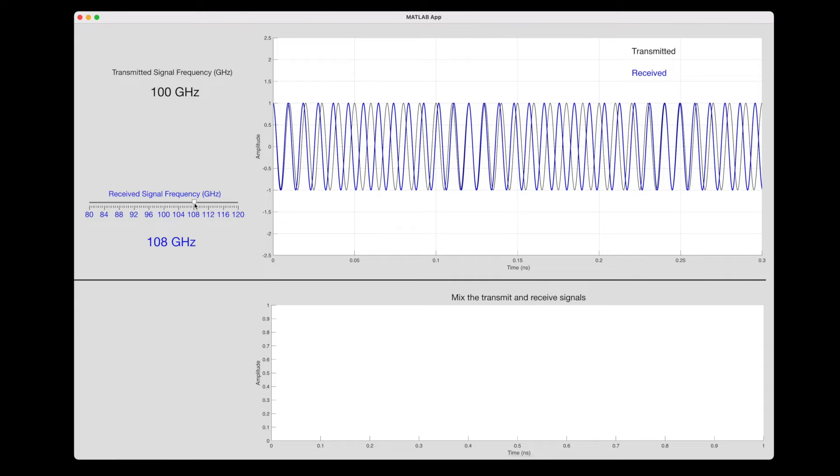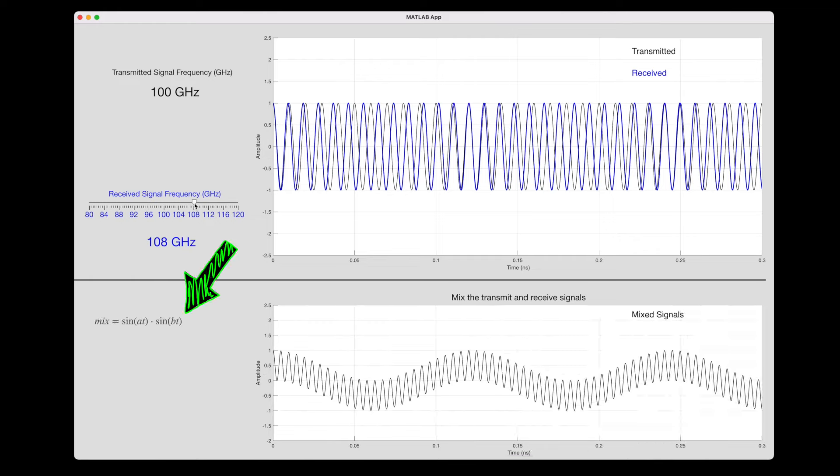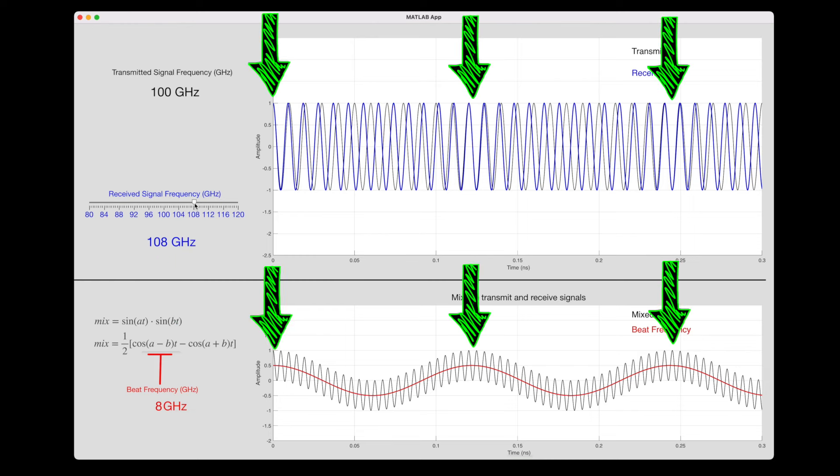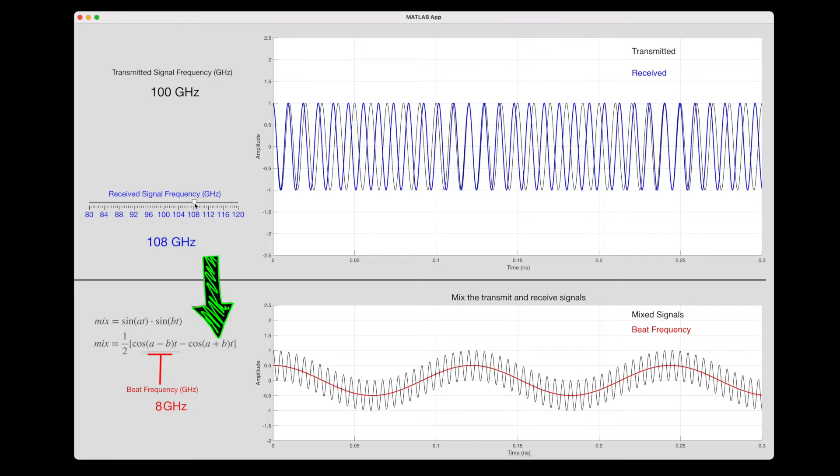To find this frequency, we can mix these two signals together by multiplying them. By the way, multiplying two sinusoids produces a signal that is composed of two new sinusoids, which we can see clearly in this waveform. There's this high frequency component, which comes from adding the transmit and receive frequencies together, and then this low frequency component that comes from subtracting the transmit and receive frequencies. This subtraction produces the beat frequency, which lines up with the in phase and out of phase portions of our two signals.